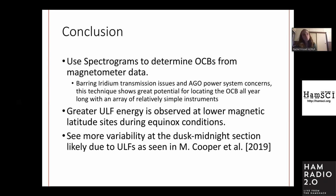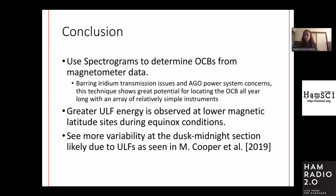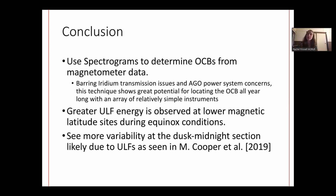In conclusion, we were able to use spectrograms to determine the OCBs from the magnetometer data. One reason this talk is important to HAMs and particularly the Personal Space Weather Station is that by including magnetometers deployed up through Canada, we can have a better idea of those areas of open-closed boundaries. Bearing iridium transmission issues and AGO power system concerns, this technique shows great potential for locating the OCBs all year long with an array of relatively simple instruments. The greater ULF energy is observed at the lower magnetic latitude sites during equinox conditions, and we see more variability at the dusk-midnight section, likely due to ULFs as seen in Matt Cooper's paper 2019.